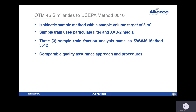They took the Method 10 train and incorporated a lot of its similarities into the new OTM 45. Both are isokinetic sample methods. They both have a sample volume target of three cubic meters. They use XAD trap media. They have different sample train fraction analyses and comparable QA/QC as well.